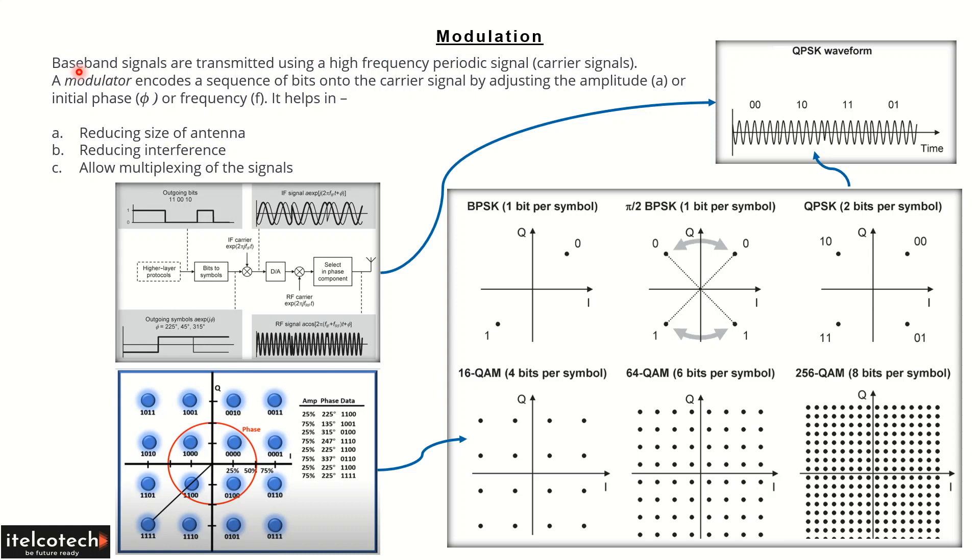Any baseband signal, which is a lower frequency range signal such as human speech in a few Hertz, when transmitted over the air doesn't travel for longer distances. We have to modulate it with a high frequency periodic signal, which is also known as carrier signals.